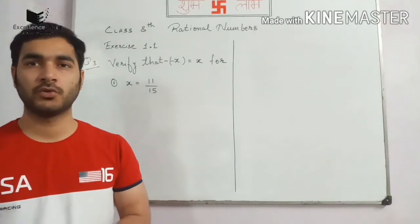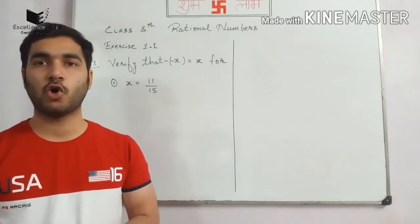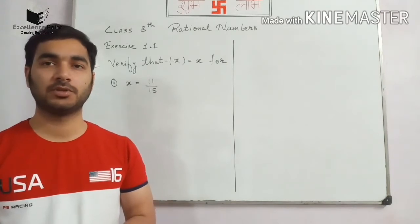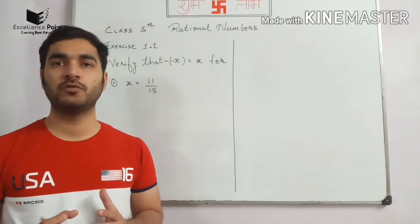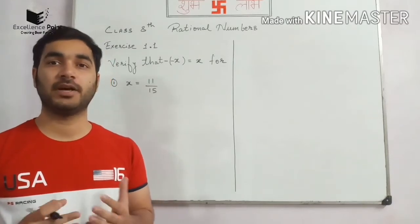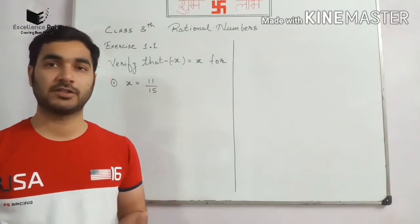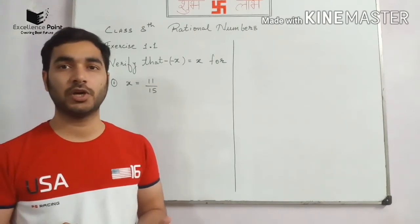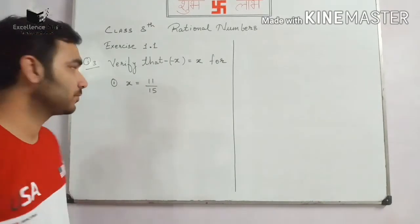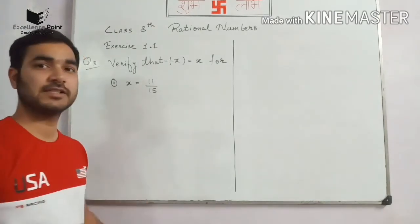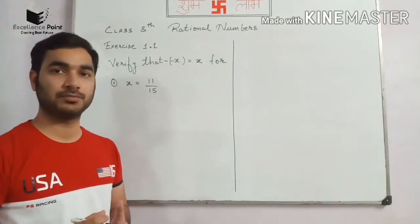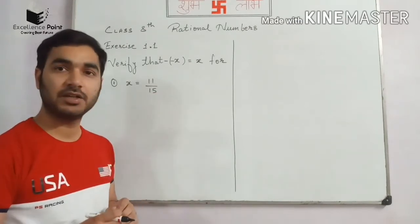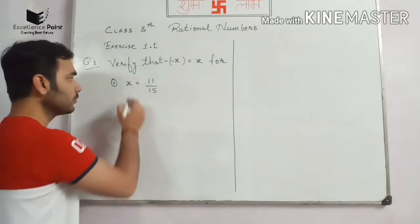Students, we are going to start with question number 3 of Exercise 1.1, Class 8 Rational Numbers. The question says that we have to prove that minus of minus of x is x. By the help of additive inverse we can easily find it. Let us see the first question, where x is given as 11 upon 15. So we have to find first the additive inverse of 11/15.